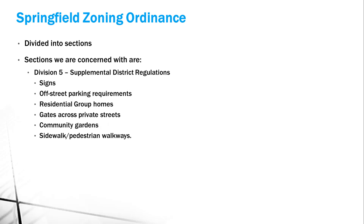There are some special zoning categories like community gardens - this has become a big thing. A lot of communities now have a whole zoning ordinance portion on community gardens: what's allowed, what's not allowed, how it's contained. Also, sidewalk and pedestrian walkways - the city of Springfield now says that if you're doing a development you have to have a sidewalk wherever applicable, so we have more pedestrian walkways.